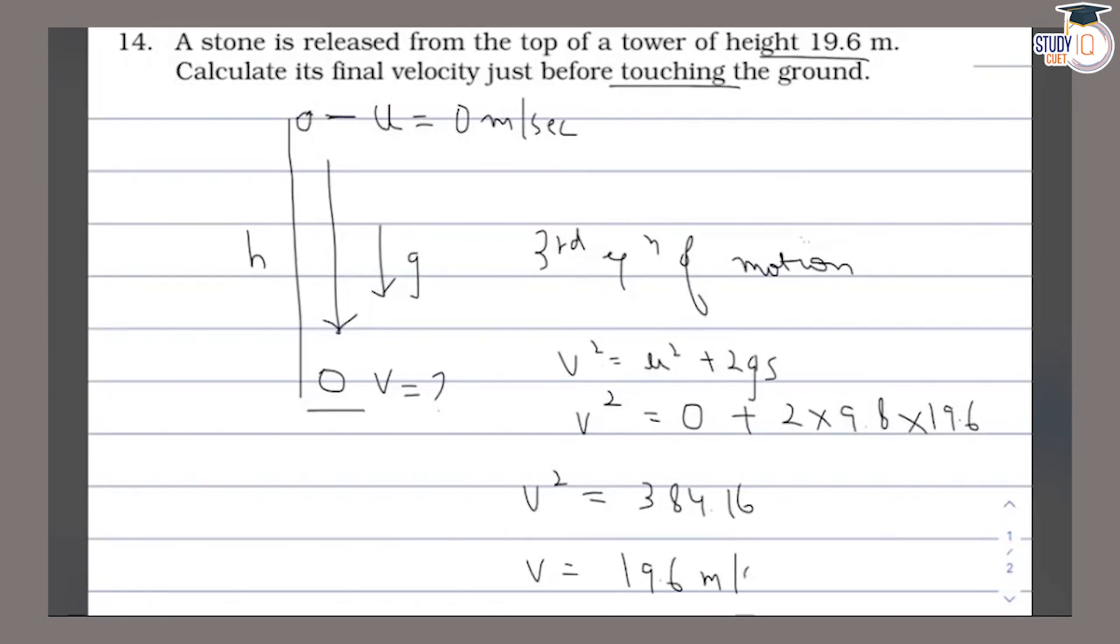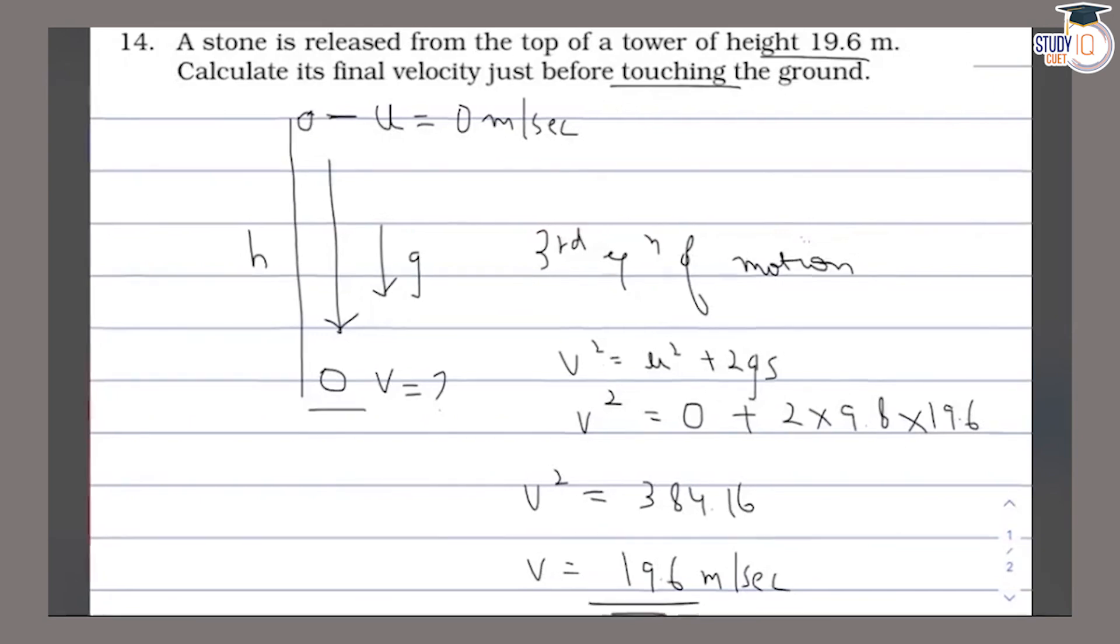h is given as 19.6 meters. So when we calculate the final value of v, v² = 384.16, which gives v = 19.6 meters per second.